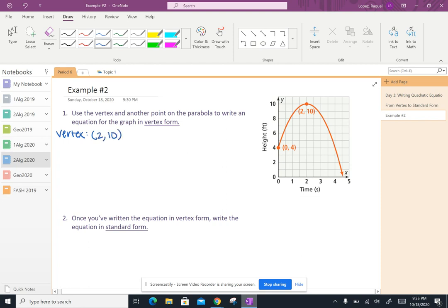So remember your vertex is the highest or the lowest point on your parabola, or you can also think of it as the point where the parabola starts changing direction. And a point on the graph that I'm going to use is 0 comma 4.